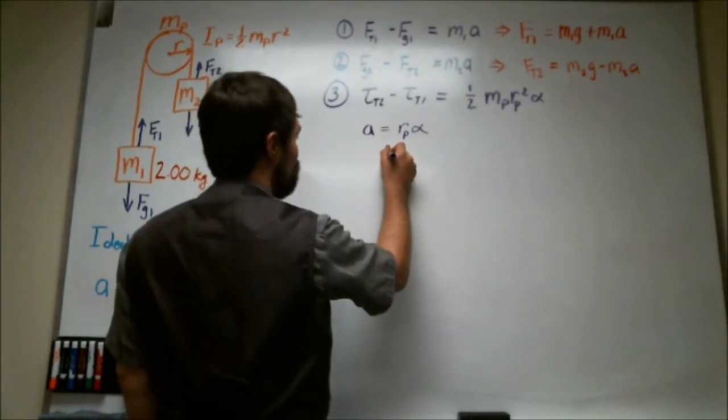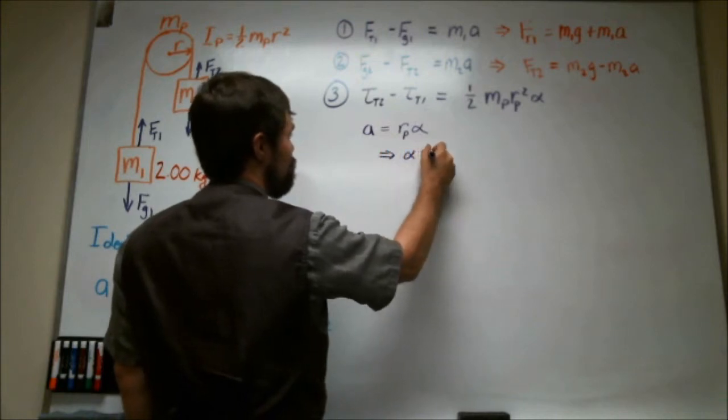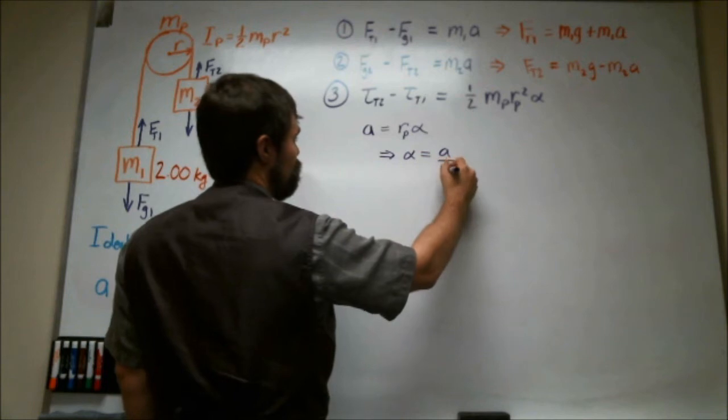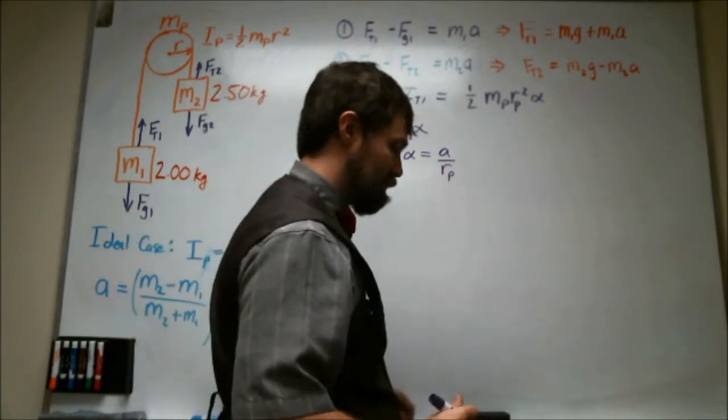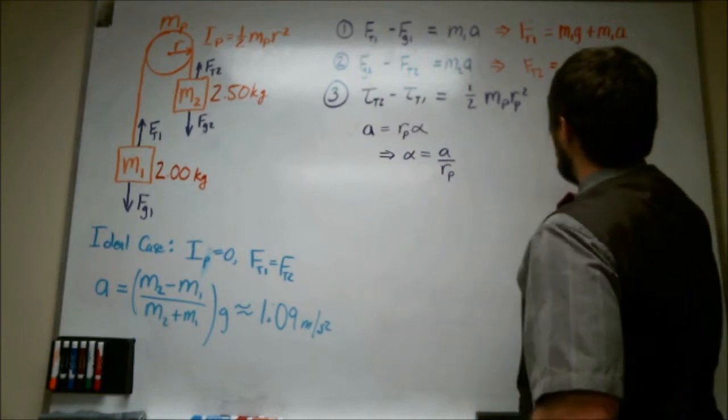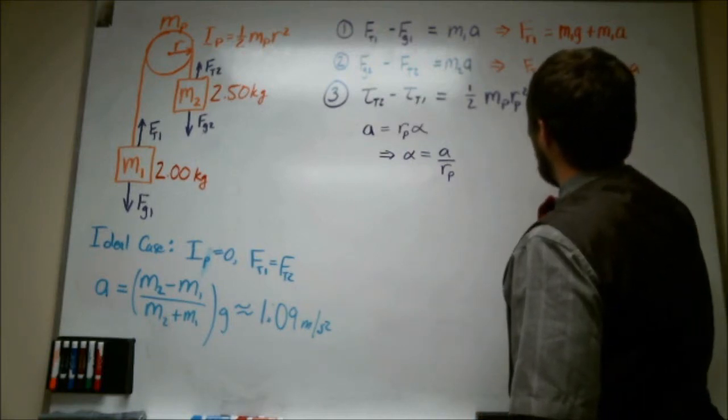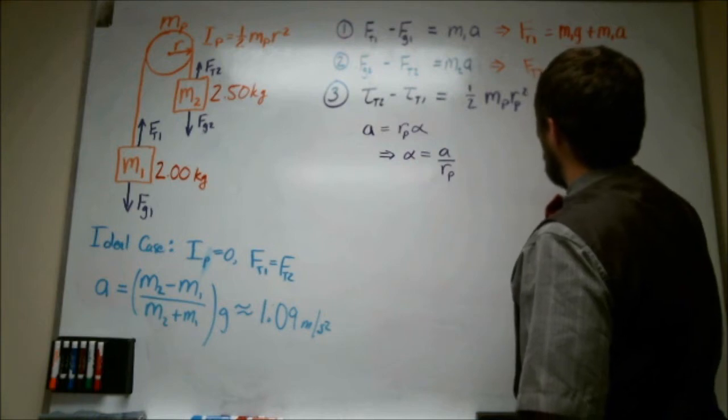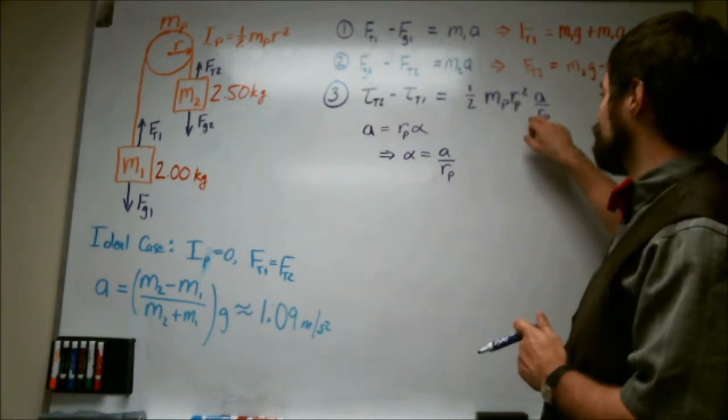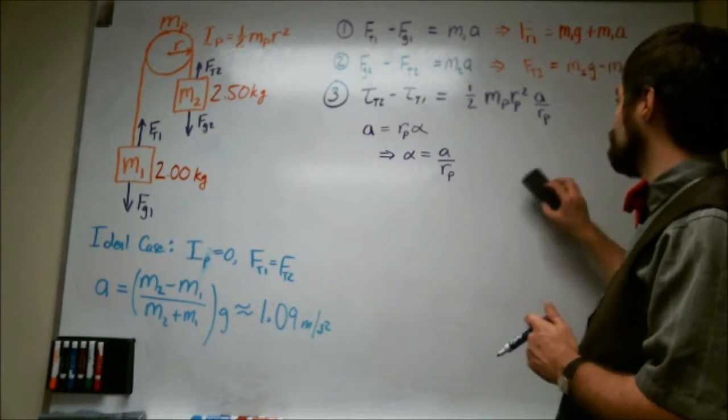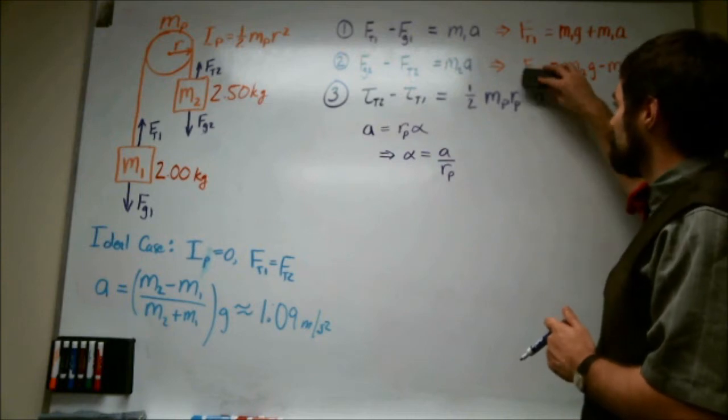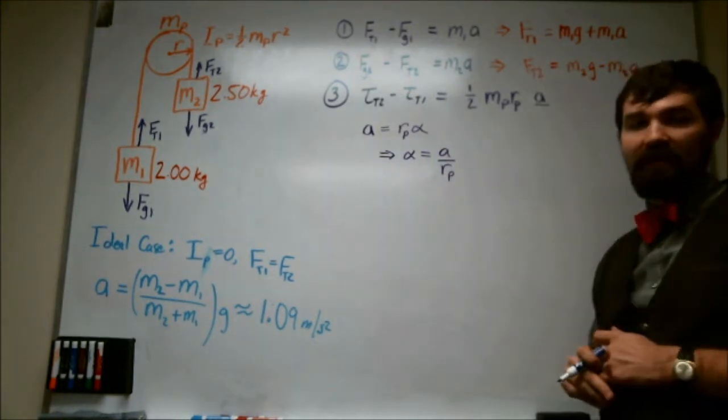Or in other words, angular acceleration is the tangential acceleration over the radius of the pulley. So we can make a substitution into this equation. So now we have acceleration over the radius of the pulley. And I notice that there's a radius of the pulley squared and a radius of the pulley. So I should cancel my like terms. And this is what I'm left with.